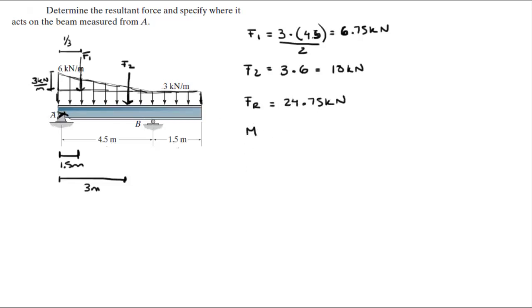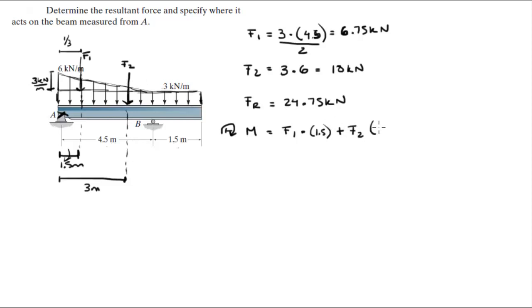The moment about A is given by F1 times its lever arm, which is 1.5 — let's say clockwise is positive since they all turn clockwise — plus F2 times 3. When you plug the numbers in, you get that the moment is equal to 64.125 kilonewton-meters.